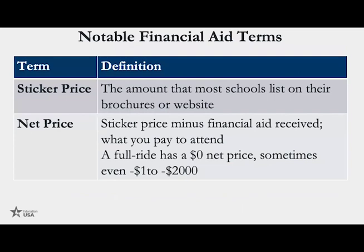Other notable financial aid terms: sticker price and net price. Sticker price is the intimidating number you see on school websites or brochures — to go to Harvard you'd see 78,000 dollars per year, which seems impossible. But sticker price is intimidating, meaning it's not necessarily what you'll end up paying. Your net price is what you will actually pay: sticker price minus the financial aid, scholarship, grant, work study, or loans you receive. If your net price is zero dollars, you have a full ride scholarship.